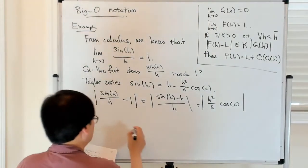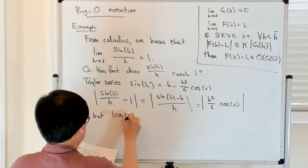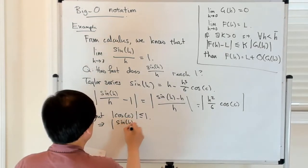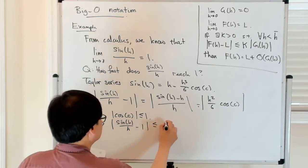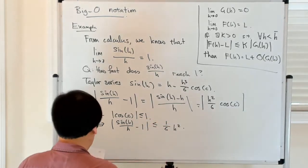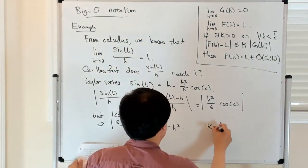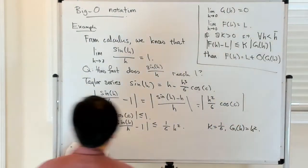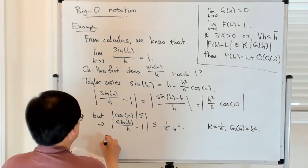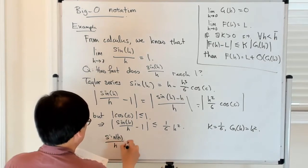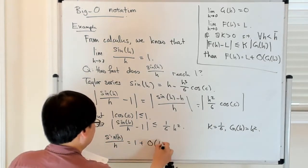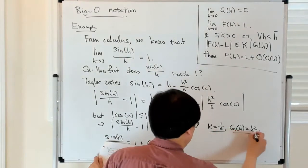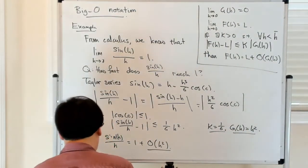But you know that cosine is less than 1. So this implies that sine h over h minus 1 is less than or equal to 1 over 6 h squared. So you can think of k, so k is 1 over 6 here, and then h squared is what I call g of h. So we can say that sine h over h is equal to 1 plus big O of h squared. Again, k is 1 over 6, and then g of h is h squared, and then the rate of convergence is big O of h squared.